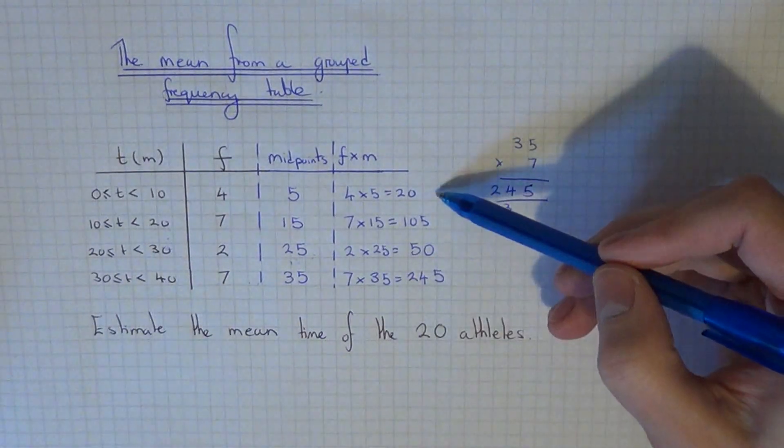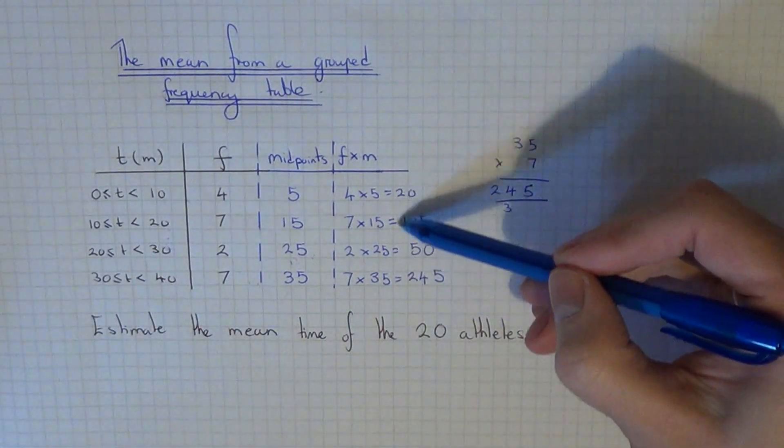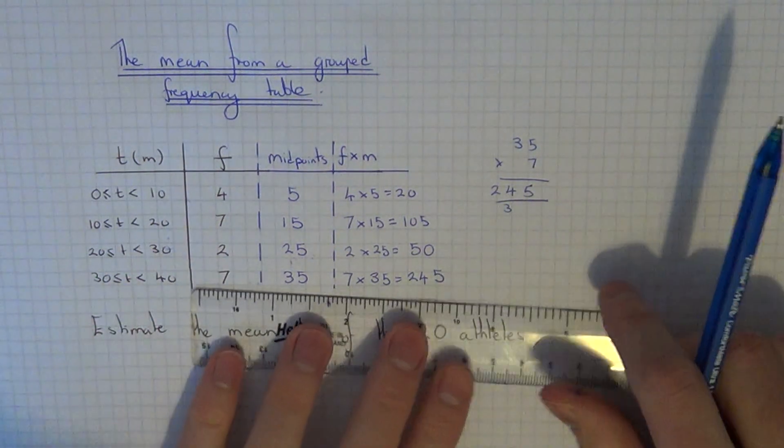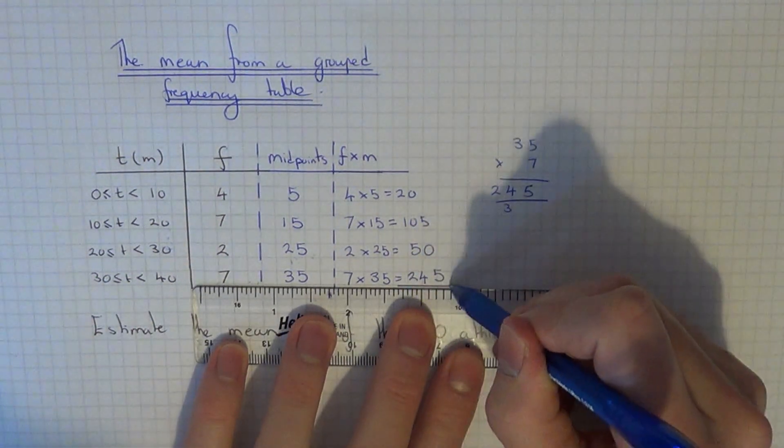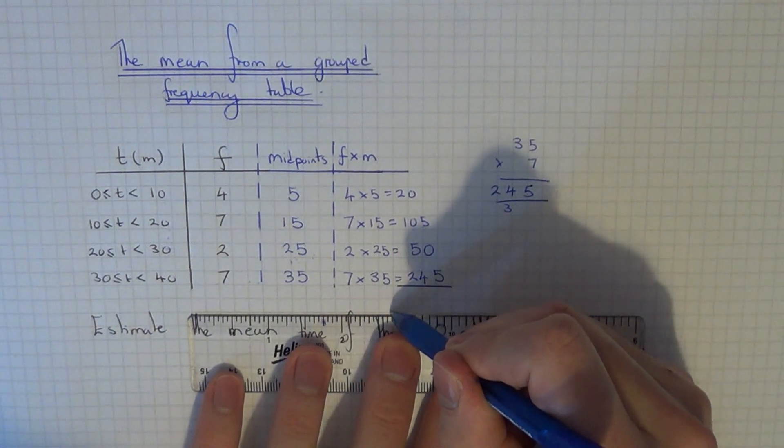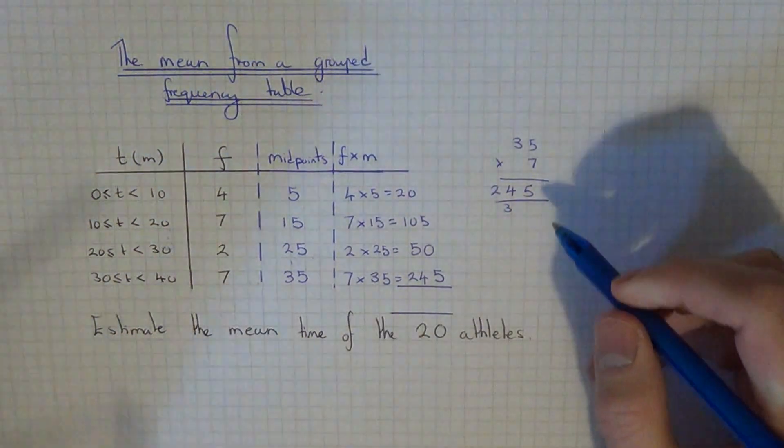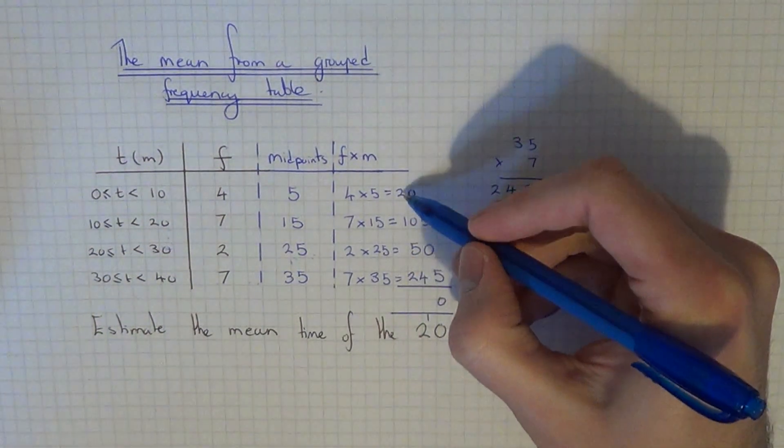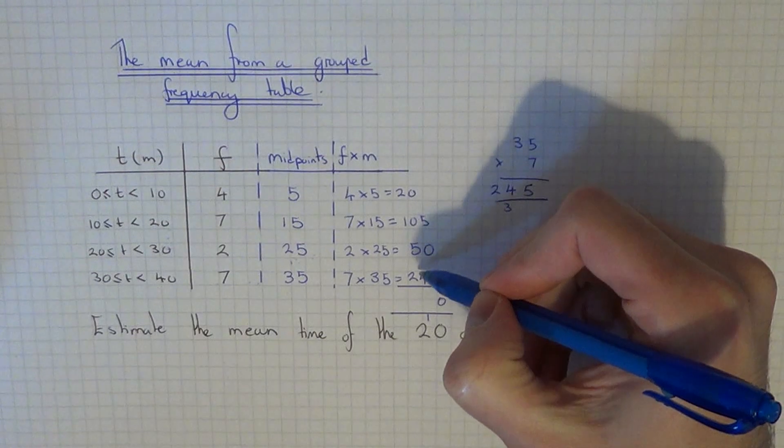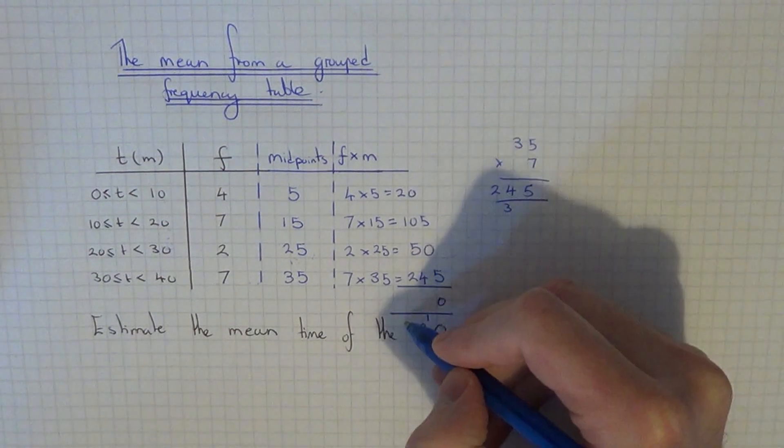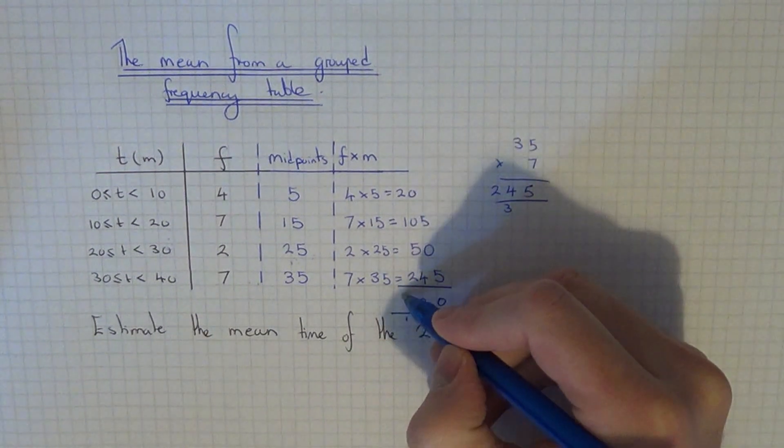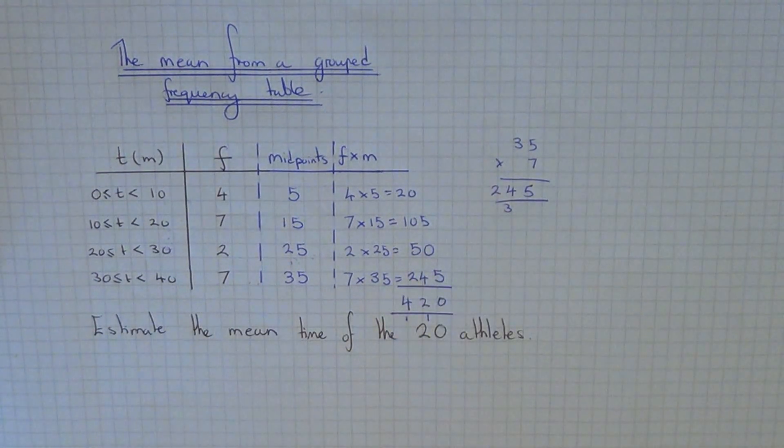So if we add all these numbers up in this column that we've just calculated, this will give us the total time of all the 20 athletes who took part in the race. So the total time of all the 20 athletes is 420.